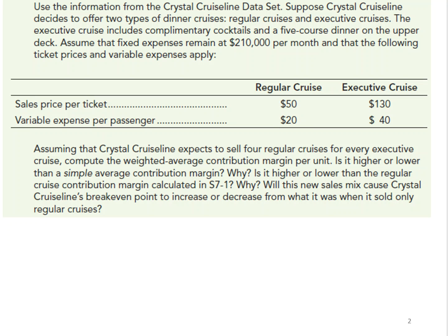Let's look at another type of CVP problem where we have a company that has multiple products. We will have a sales mix and we need to determine which product we should try to sell more of so that we can get a higher operating income, or which product is going to give us the highest contribution margin.